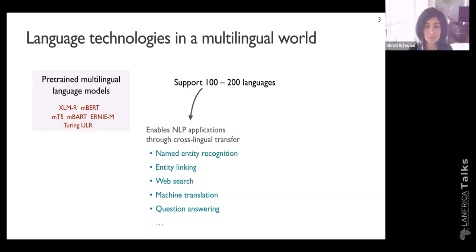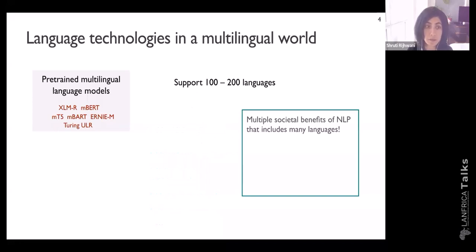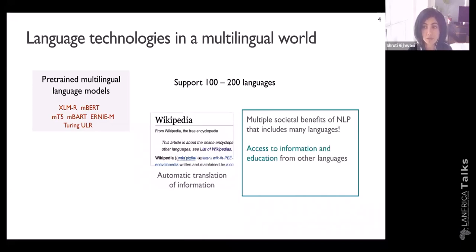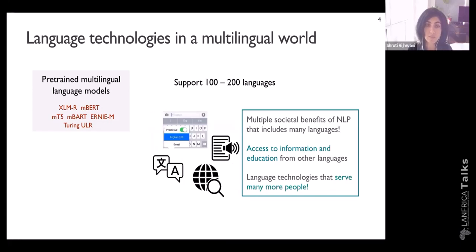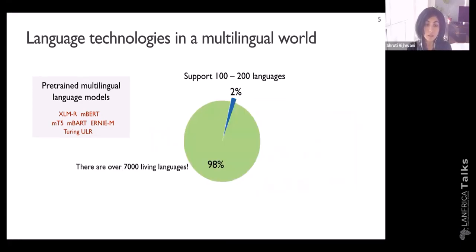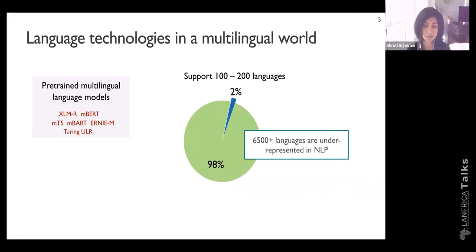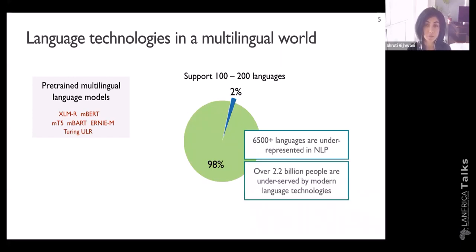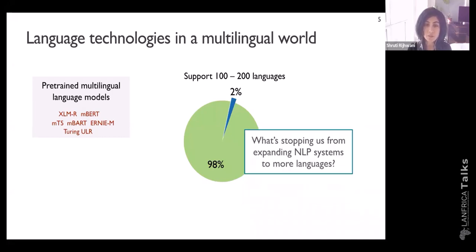However, many of these 100 to 200 languages are very low-resourced, and cross-lingual transfer may not actually be very straightforward. There are multiple societal benefits to having models that include a large number of languages — this enables access to information and education, for example automatic translations of Wikipedia content or online shopping experiences in a customer's native language. But while these models support a large number of languages, there are over 7,000 living languages in the world, so they actually only include about 2% of the world's living languages. The 2.2 billion people that speak these languages are underserved by modern language technologies.